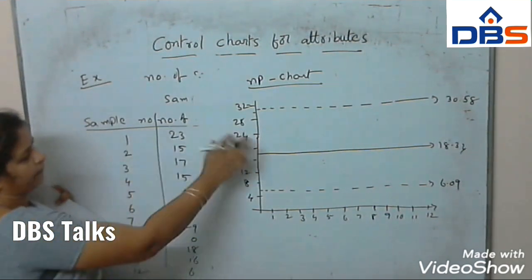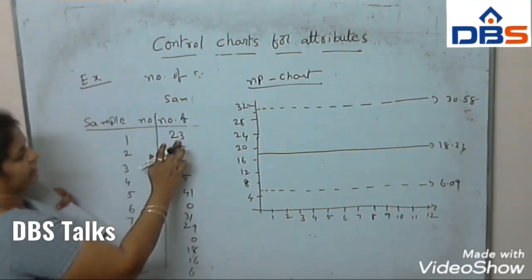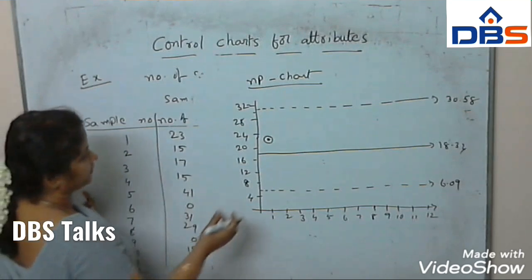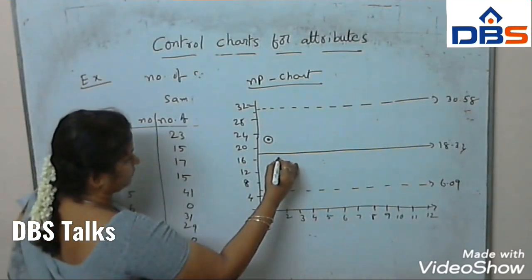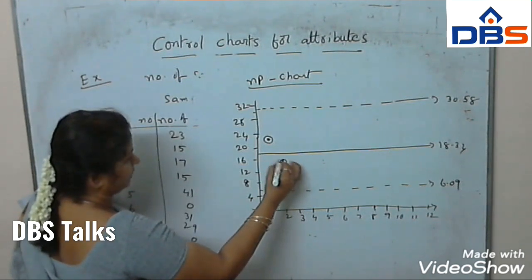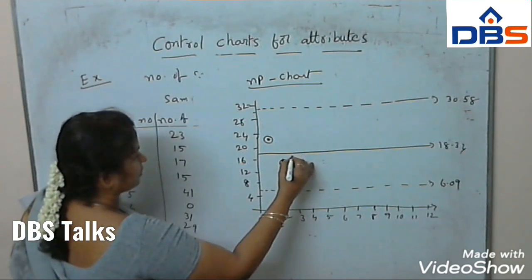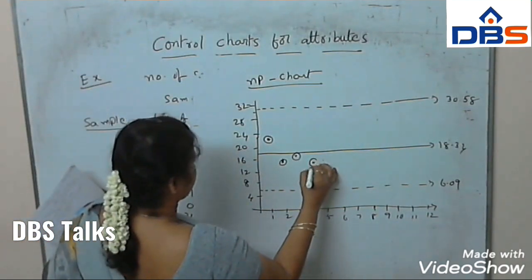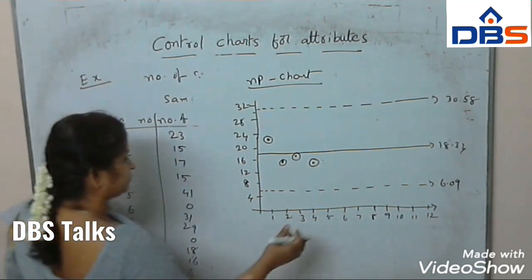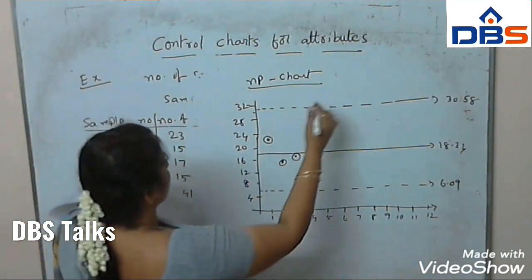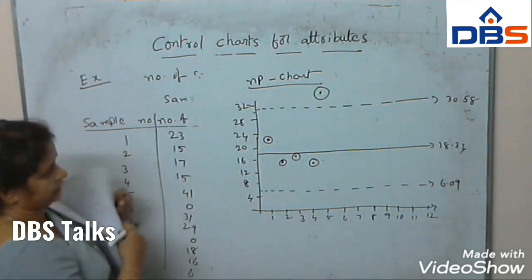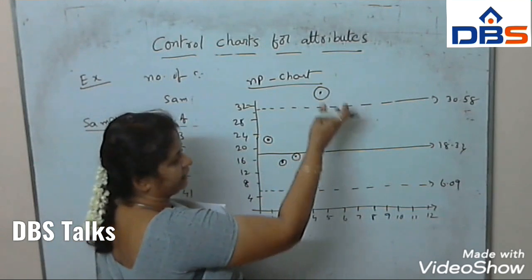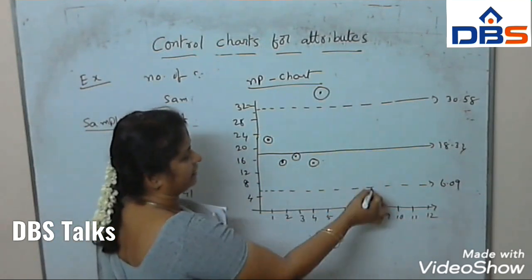Next, we mark all the sample points. For sample 1, defectives are 23. For sample 2, it is 15. For sample 3, it is 17. For sample 4, it is 15. For sample 5, it is 41 — which is above the upper limit. So one point lies outside the limits.